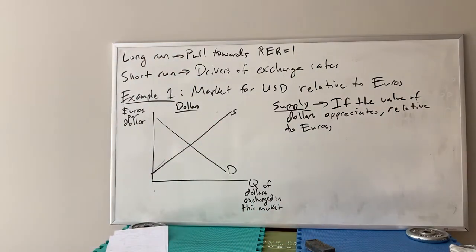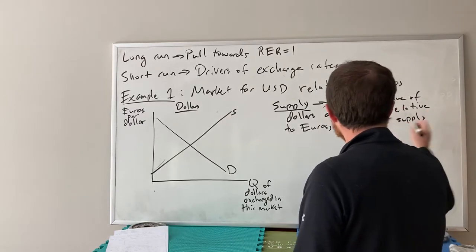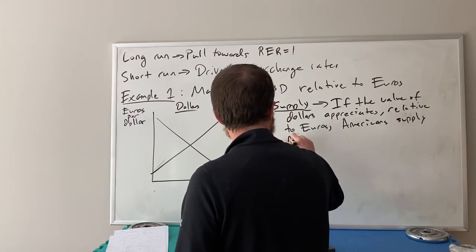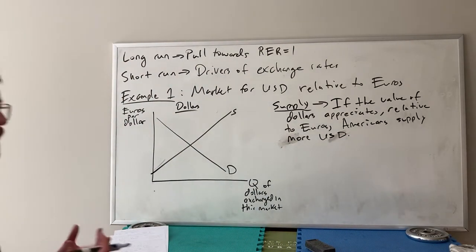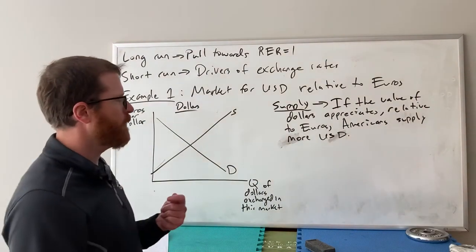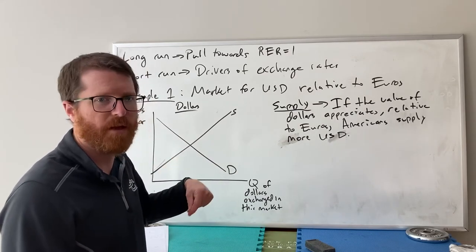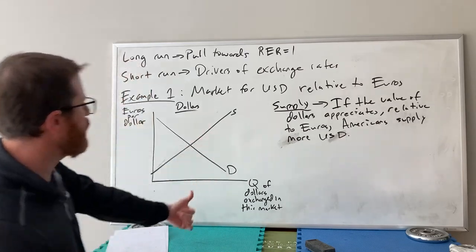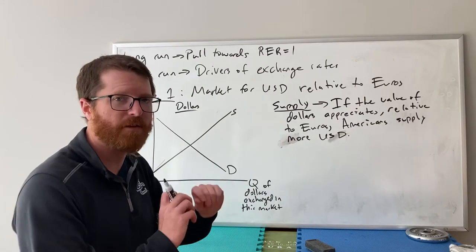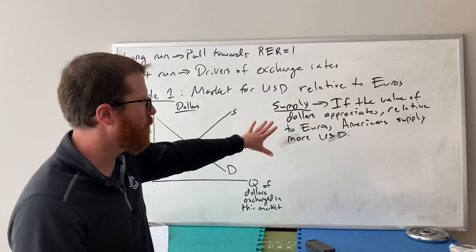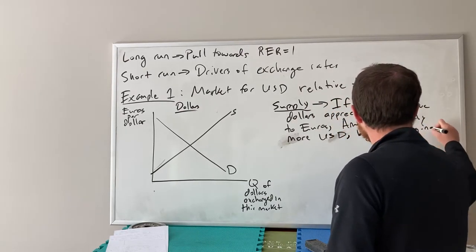The nomenclature is a bit confusing because we normally think about goods and services. The supplier of dollars are people who have dollars — they could take those dollars and buy euros with them. If the US dollar goes up in value, people will sell more dollars. Selling dollars means buying things — in this case, buying euros. So if the US dollar appreciates, Americans supply more US dollars by exchanging them for euros.